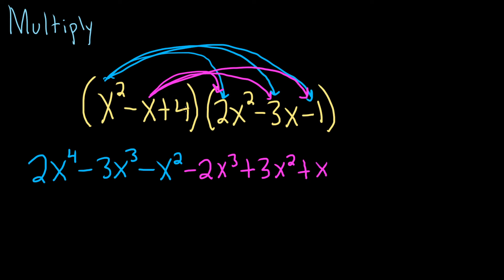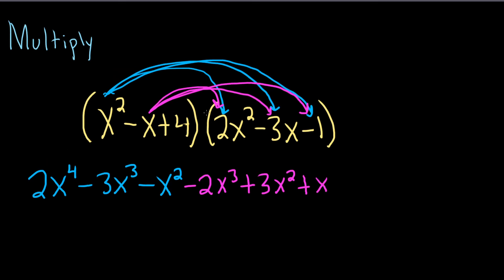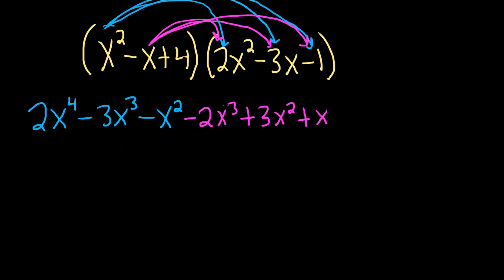Now we'll multiply by 4. 4 times 2x squared gives us 8x squared. 4 times negative 3x gives us minus 12x. And 4 times negative 1 gives us minus 4.